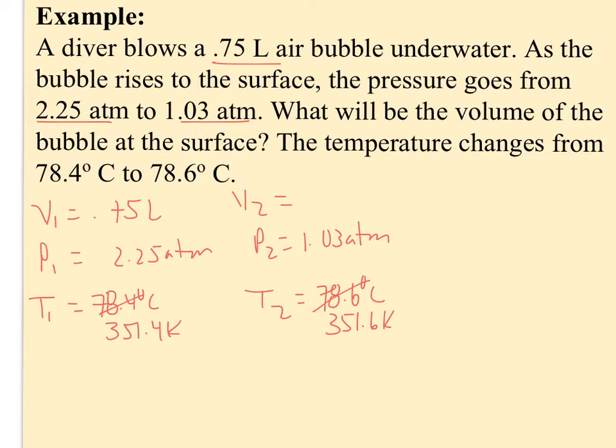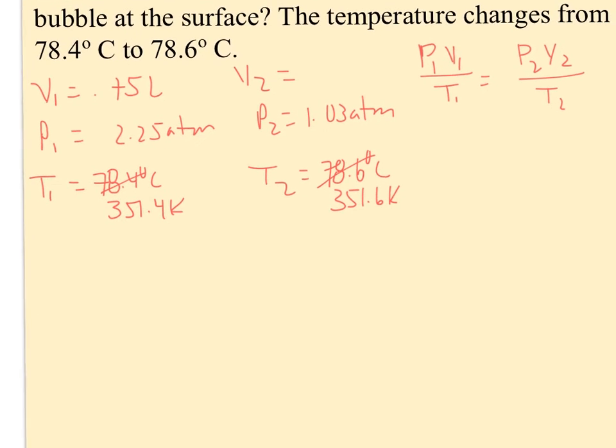And so since I have all three variables being involved here, I need to use my combined gas law P1 times V1 over T1 equals P2 times V2 over T2. And this is really no more difficult to solve for. I'm going to go ahead and scroll up here so we have a little more room to work with.